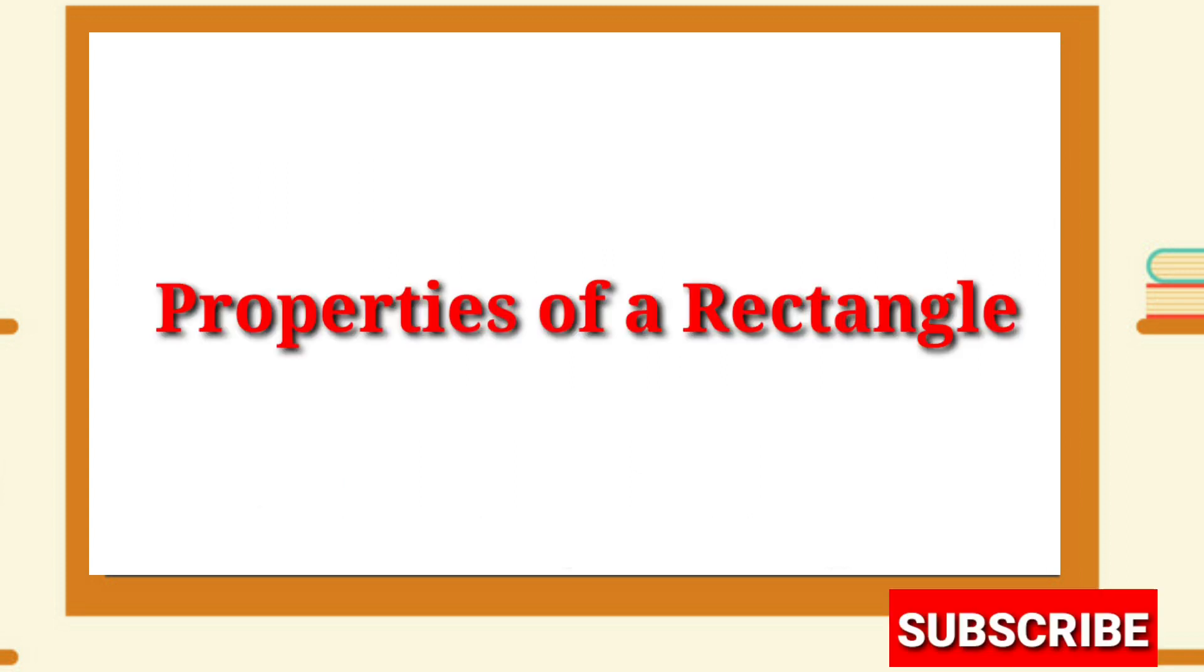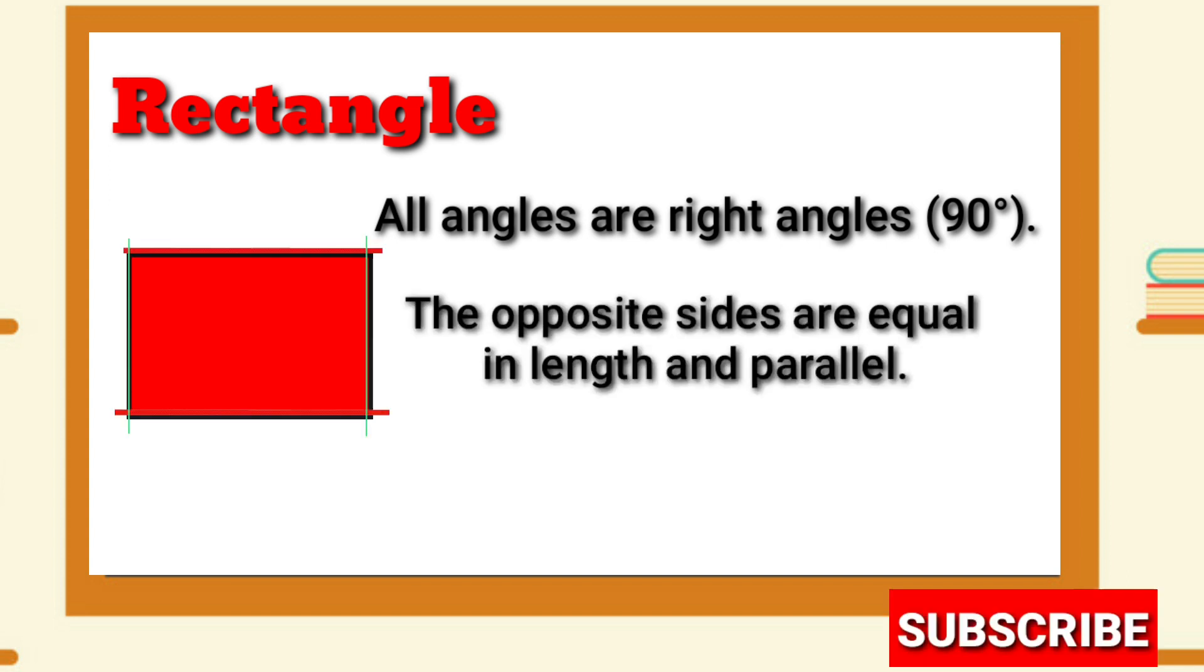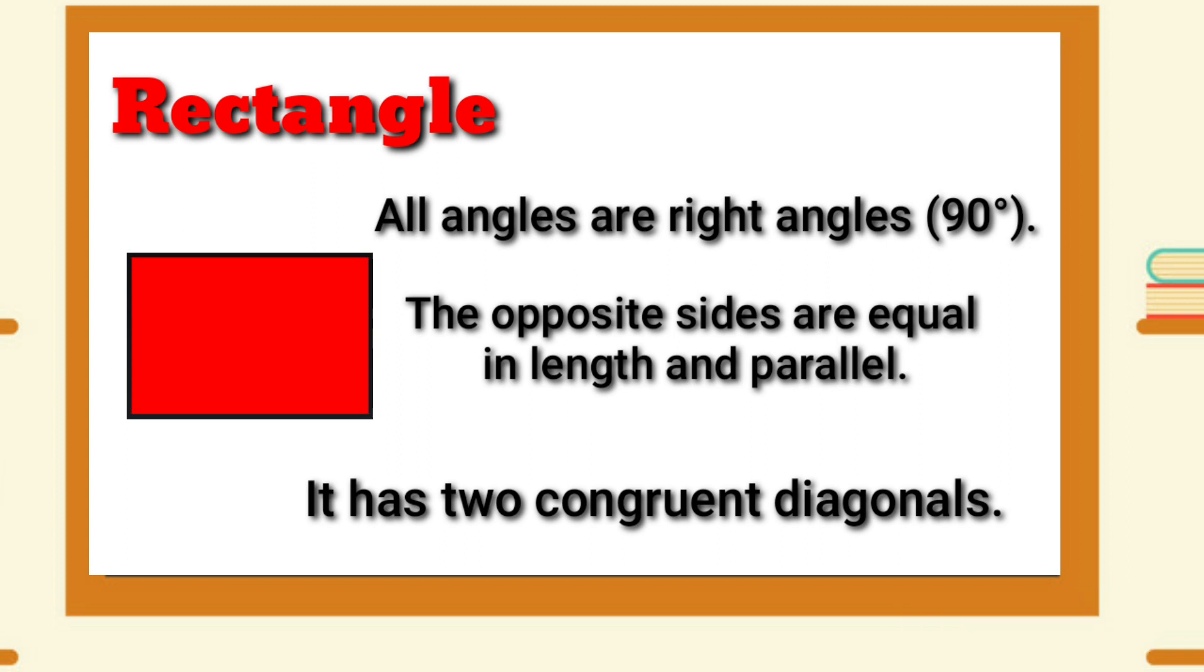Properties of a Rectangle: All angles in a rectangle are right angles. Each measures exactly 90 degrees. The opposite sides are equal in length and parallel. It has two congruent diagonals.